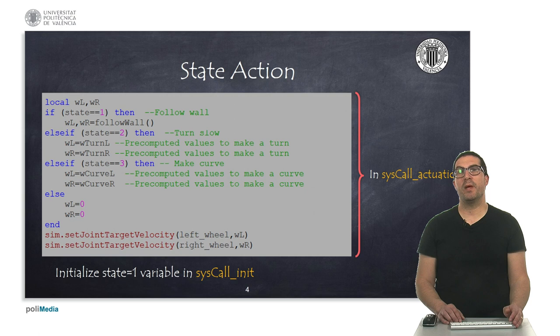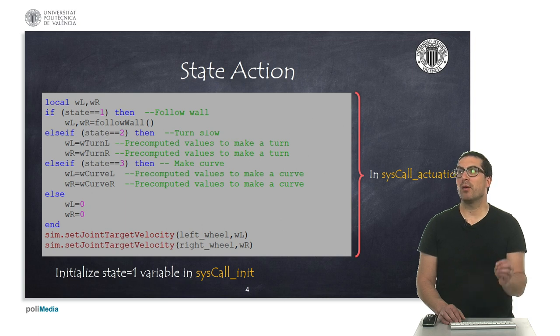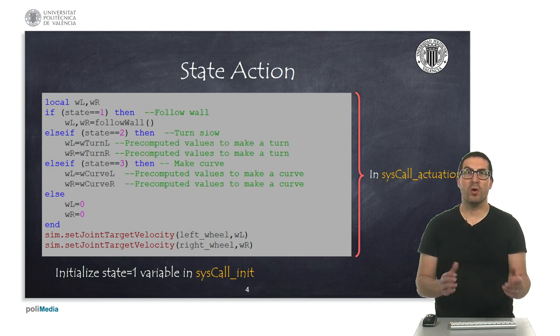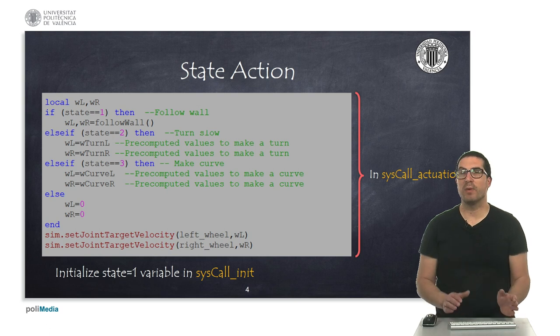Here I show you the code that you must implement in the syscallActuation function. As you can see, we're using the variable state that must be initialized to one in the syscall init function. This is the initial state where the robot is. Depending on the state value, the robot must do one thing or another. For instance, in state one, we must follow a wall. This is achieved by calling a follow-wall function that will return the wheels' velocities. Or, if we are in state two or three, we must apply pre-computed values for those wheels to make the proper turn or to make the curve.